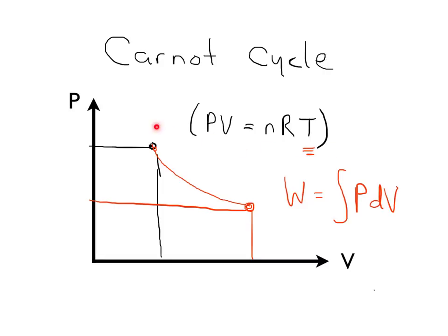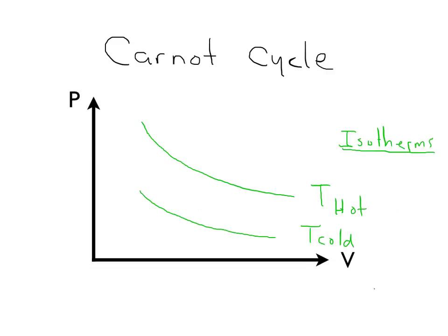We can go ahead and use this equation of state to relate those things. Before we set up the Carnot cycle, I need to remind you about isothermal processes. Sometimes, when we travel through this PV diagram, we can do so in a way such that the temperature is equal to a constant. Here I've shown two isotherms: one that I'm calling T-hot, some warm temperature, and one that I'm calling T-cold, some colder temperature. In an isothermal process, the temperature is equal to a constant, so P is equal to nRT over V — or another way to say this is that P is proportional to 1 over the volume of the system.